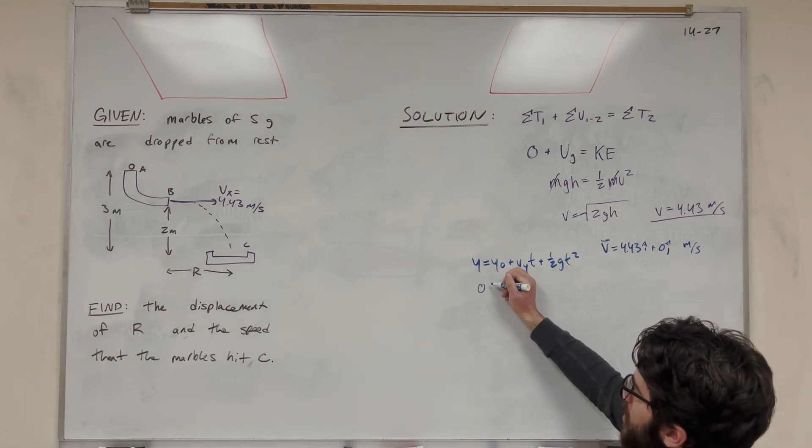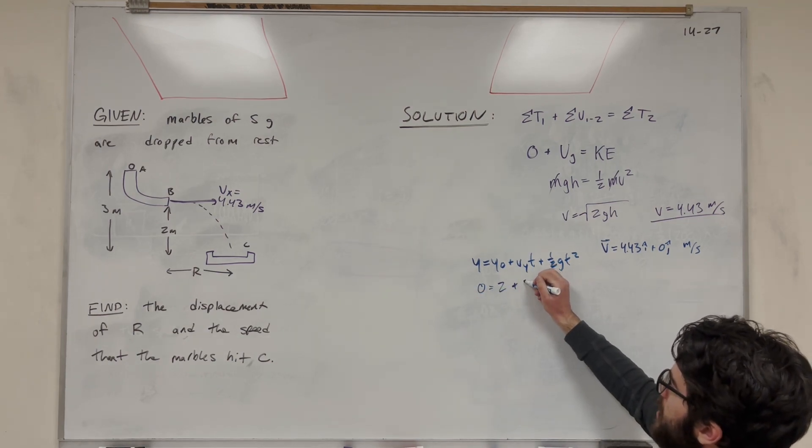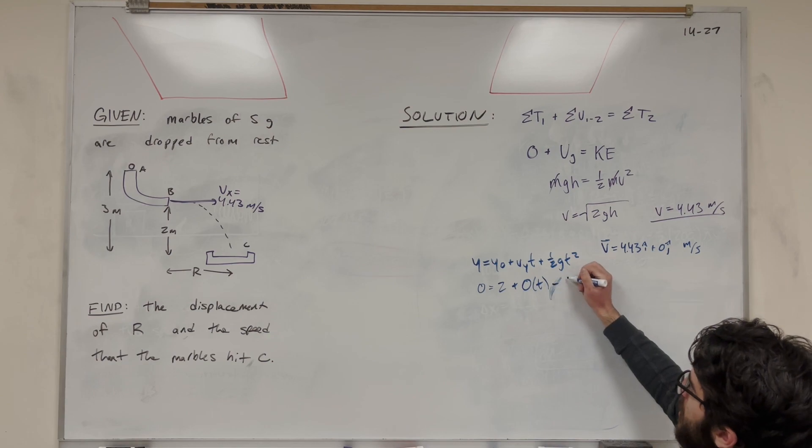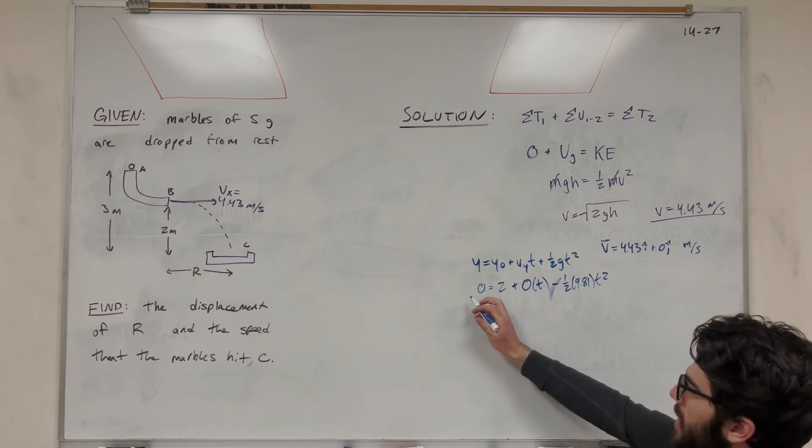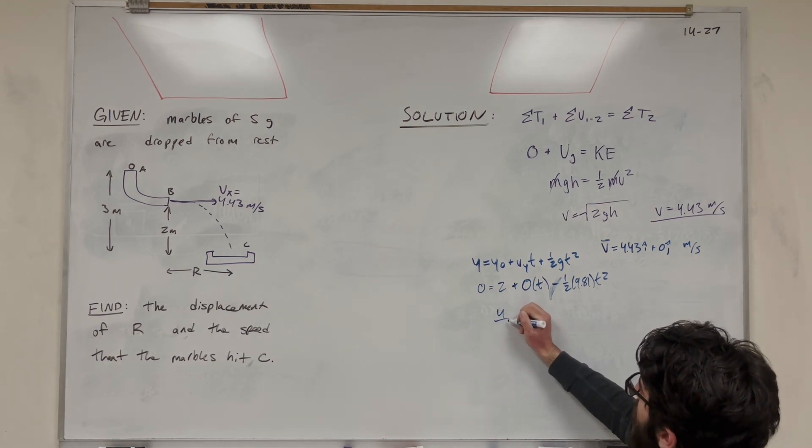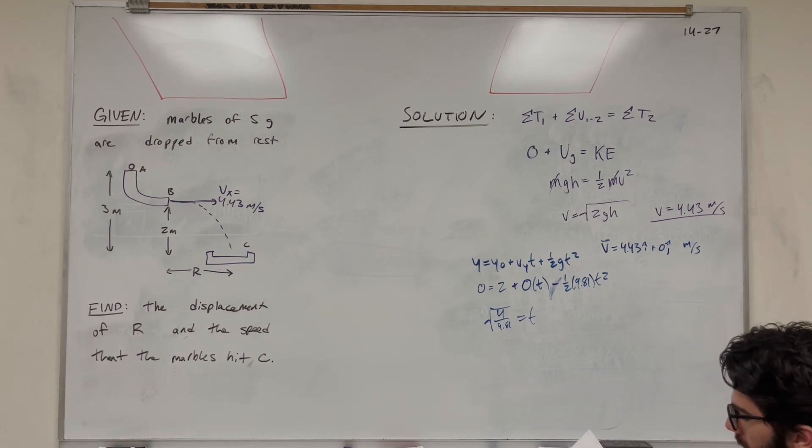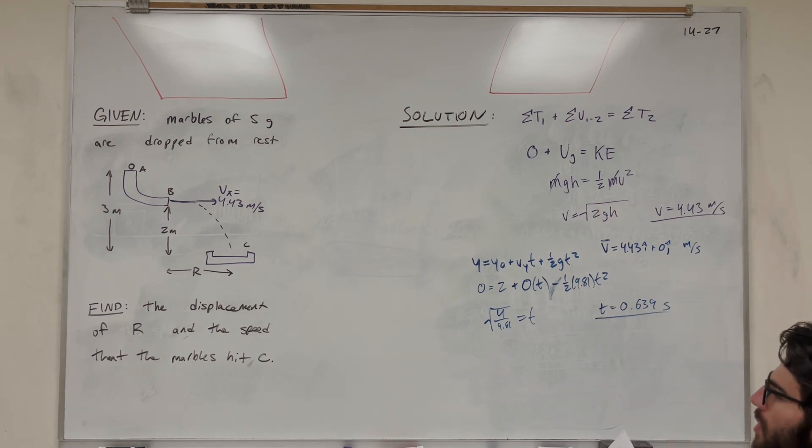So we're using this equation. Let's just plug in everything we know. y final is 0, y initial is 2 meters because we're 2 meters off the ground. Velocity initial y is 0 times time - we don't know that yet, but it's going to be multiplied by 0. And then this is going to be minus ½ times 9.81 t squared. So obviously you're going to subtract that 2 over, and then multiply it over, and you're basically going to get 4 over 9.81, square root of that is equal to t. So then you're going to get that t is equal to 0.639 seconds. That's how long it takes the ball to hit the ground.